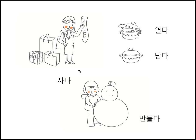열다 means open, 닫다 means close, 사다 means buy — for example, buy lots of things at the department store. 만들다 means make. The 요-forms are: 열어요, 닫아요, 사요, 만들어요.